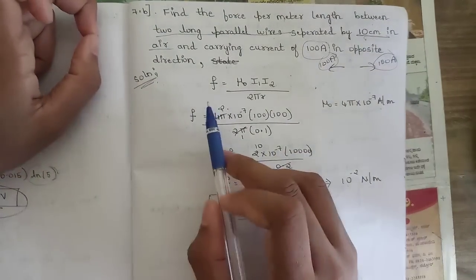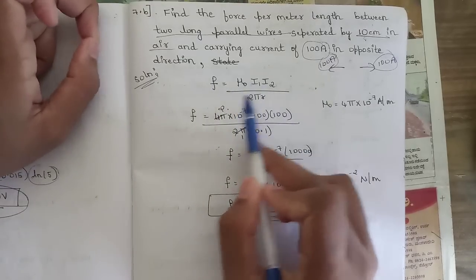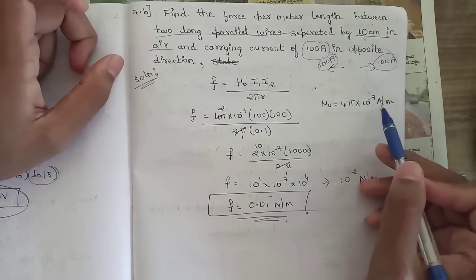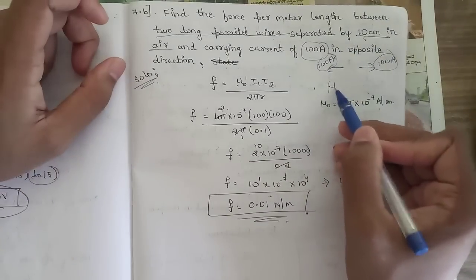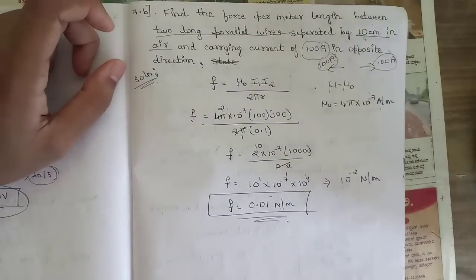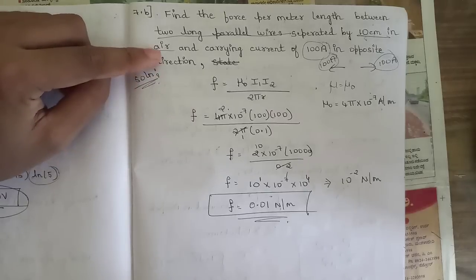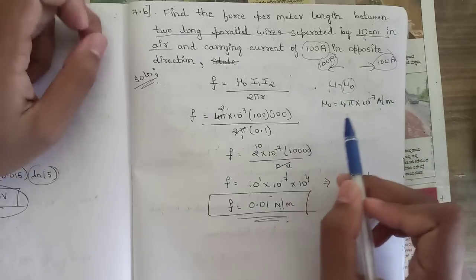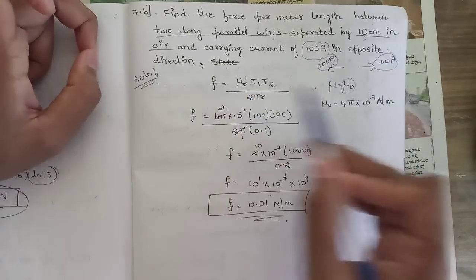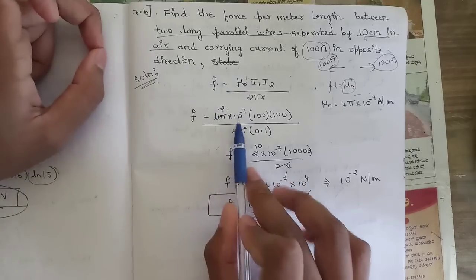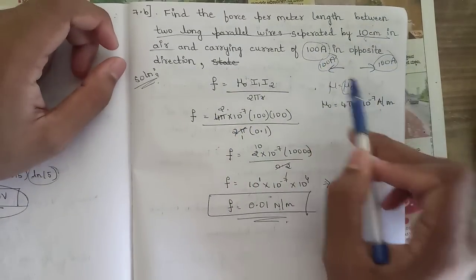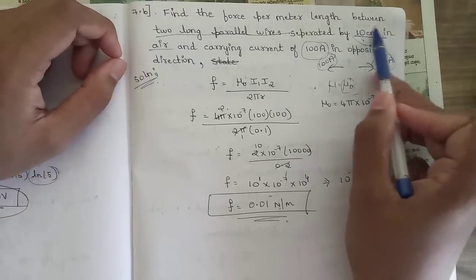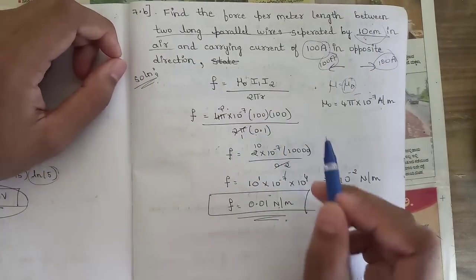The formula for force per unit length is F = μ₀ I₁ I₂ / (2π r). The standard value of μ₀ = 4π × 10⁻⁷ H/m. Since we are in air (free space), μ = μ₀. Substituting: F = (4π × 10⁻⁷ × 100 × 100) / (2π × 0.1).